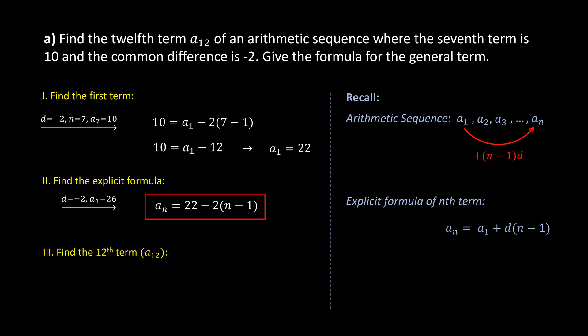Now that the explicit formula is known, we can go ahead and find term 12. In that case, we start with the explicit formula and then substitute 12 for n. Therefore, the 12th term equals 0.